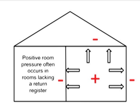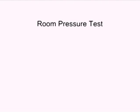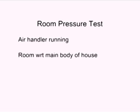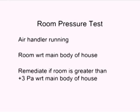Excessive room pressure is often caused by the absence of a room return register in homes with forced air systems. Testing rooms for positive pressure is easy and is done with the air handler running. Test the room pressure with reference to the main body of the house. A positive pressure equal to or greater than 3 pascals requires remediation.